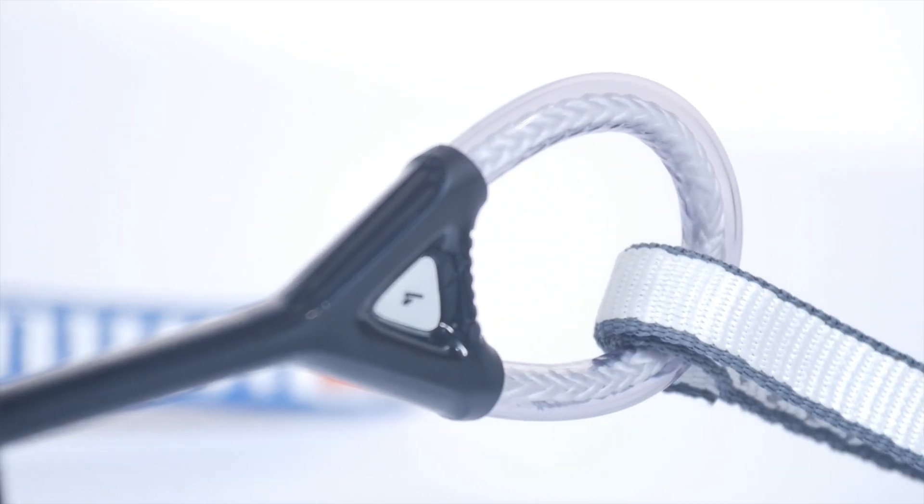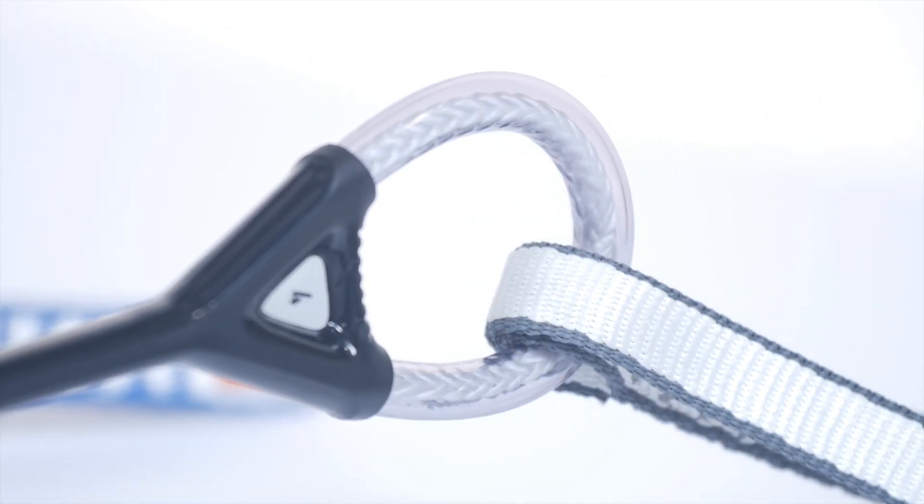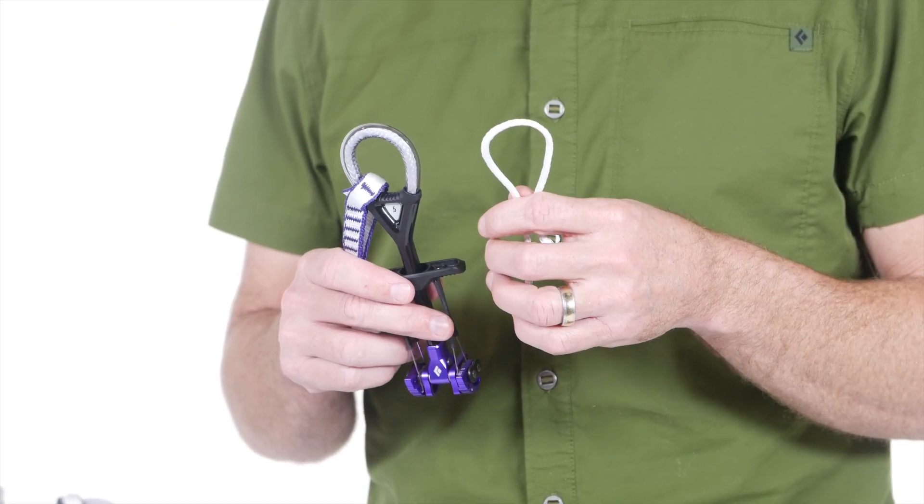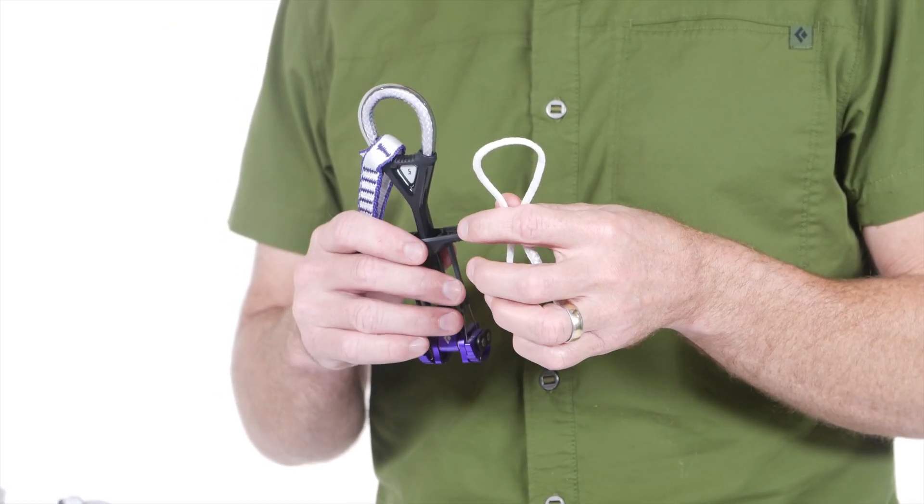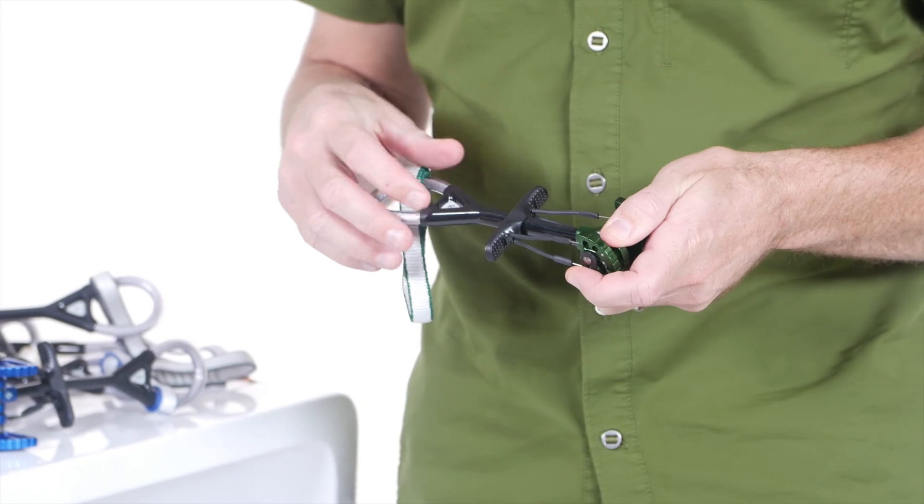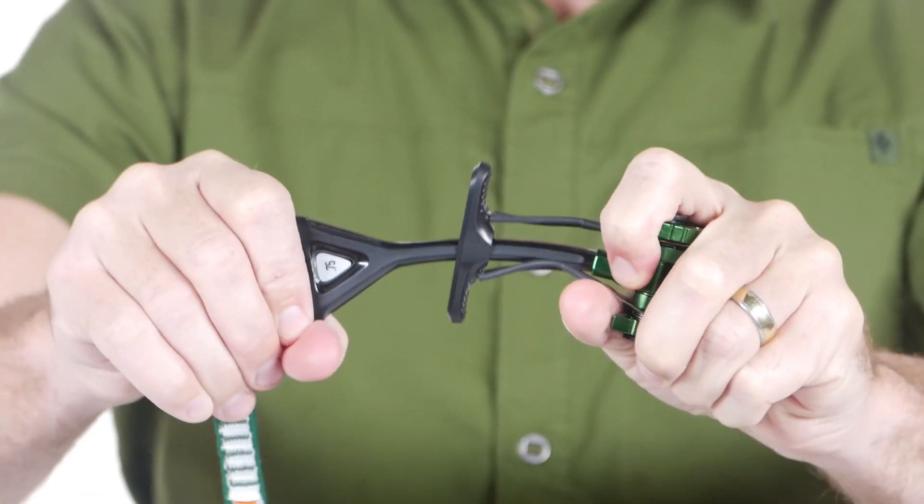Replacing the heavier steel cable of a traditional cam, a continuous and super-light Dynex core maximizes strength and reduces weight. A lightweight stem fully protects the core while providing stiffness and durability.